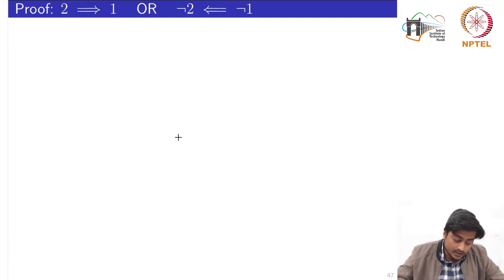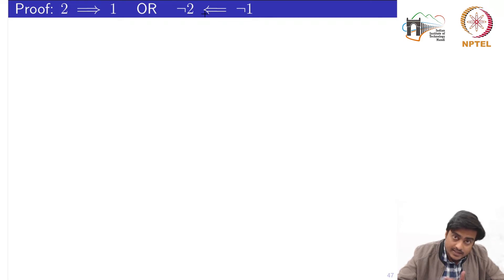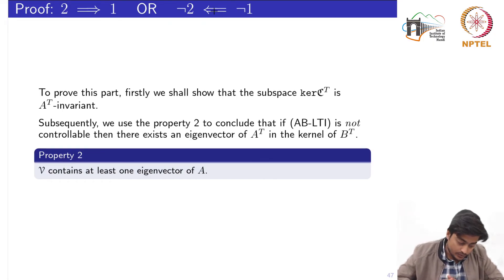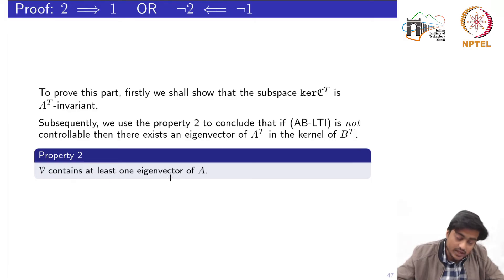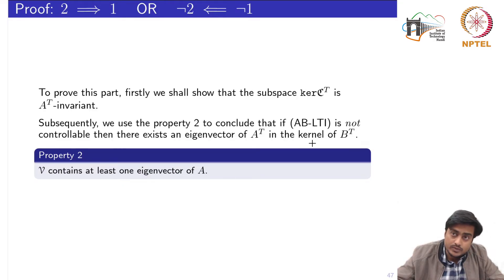For the second direction: if the system is not controllable, then there exists an eigenvector of A-transpose in the kernel of B-transpose. We prove this using two arguments: first we show that the kernel of C-transpose is A-transpose invariant, then we use Property 2 — that any A-transpose invariant subspace contains at least one eigenvector of A-transpose — to conclude that if (A, B) is not controllable, there exists an eigenvector of A-transpose in the kernel of B-transpose.